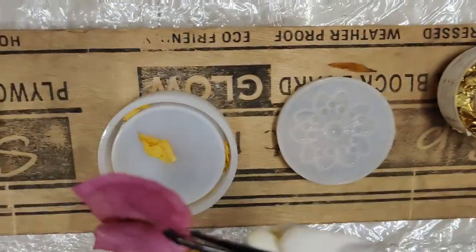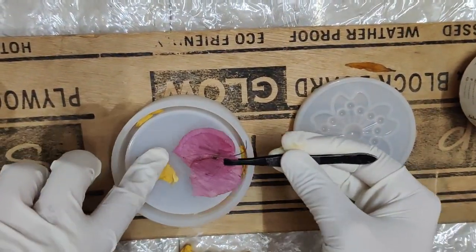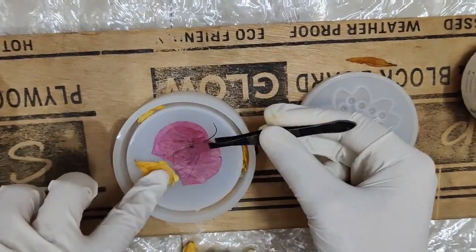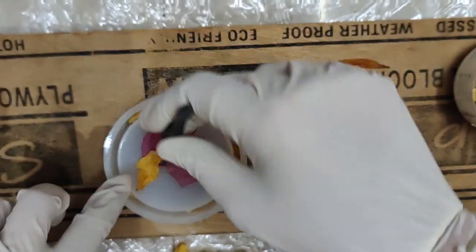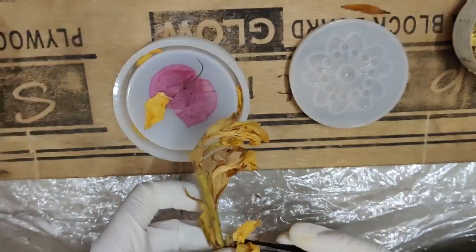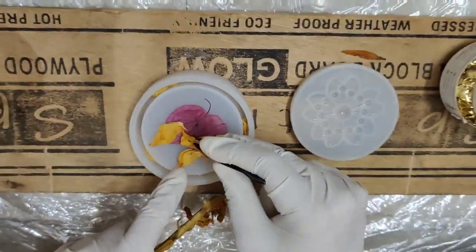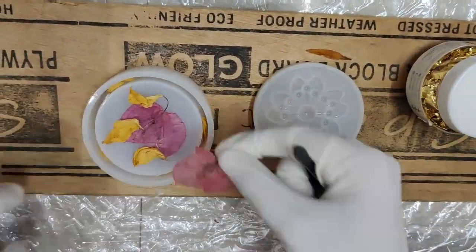I will be using the forceps to put these flowers carefully on the side of the base. So I also have this bougainvillea flower, which I have dried up by keeping it inside my book. I feel the pink colour will look beautiful in the base of the box.